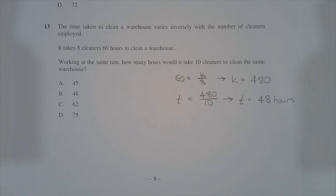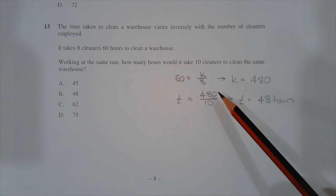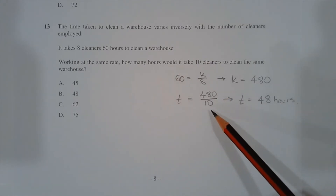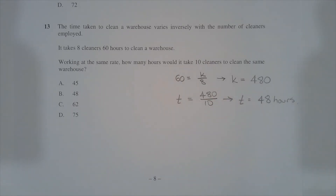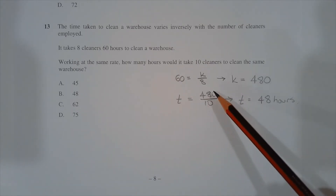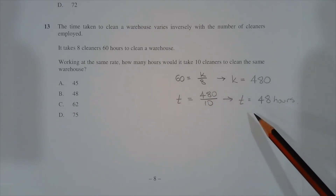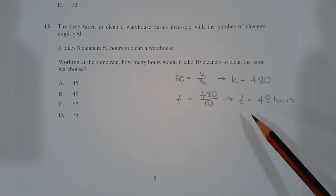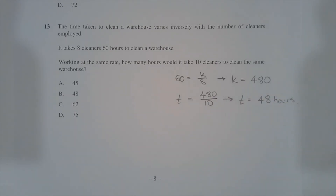Now that we have the value of k, we can apply the same inverse variation formula to calculate the amount of time it would take 10 cleaners to clean this warehouse at the same rate. T is equal to 480 divided by 10, and 480 divided by 10 is equal to 48. So it would take 10 cleaners 48 hours to clean the warehouse at the same rate. Therefore the answer is option B.